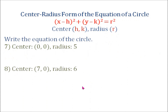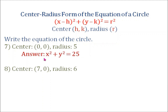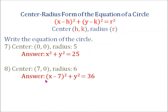Now let's do it the other way around — writing the equation of the circle given the center and the radius. Number 7: center at coordinates 0 and 0, radius 5 units. The equation is x squared plus y squared equals 25. Number 8: center at coordinates 7 and 0, radius 6 units. The equation is the quantity x minus 7 squared plus y squared equals 36.